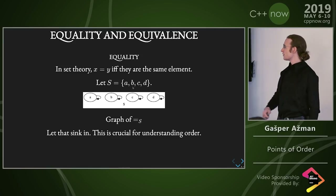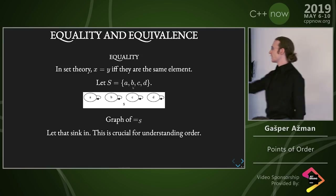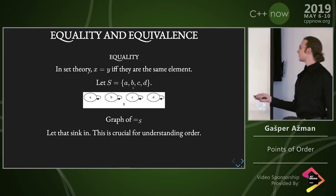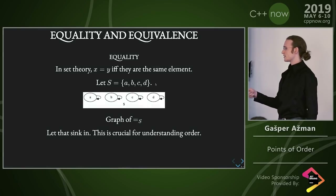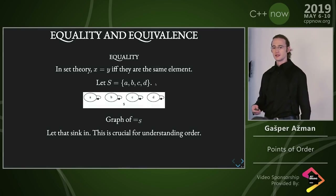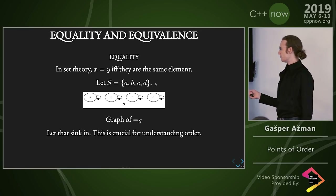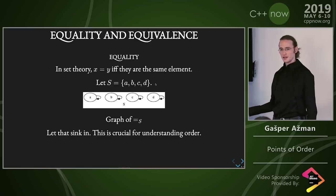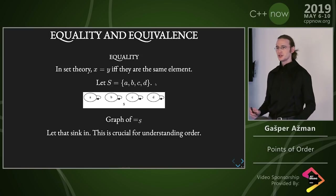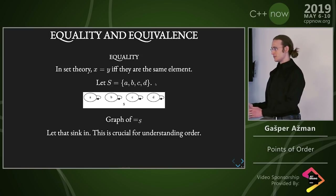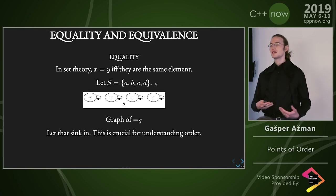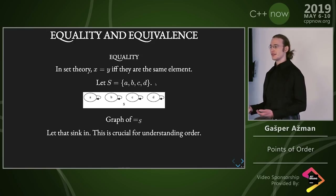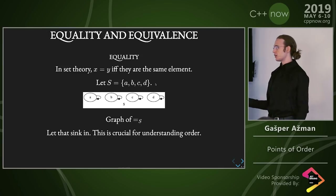This is a graph of the equality relation. Every element is in relation with itself, and it is in relation with nothing else, as far as equality is concerned. That's equality. Crucially, nothing else is equality. Very many things can look like equality if you squint at them, and that's really useful — but nothing else is equality.